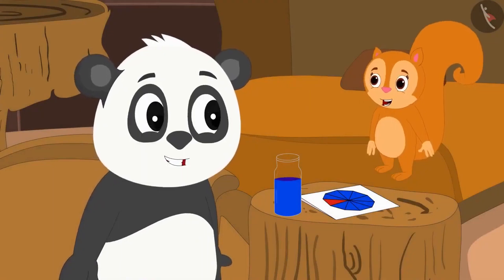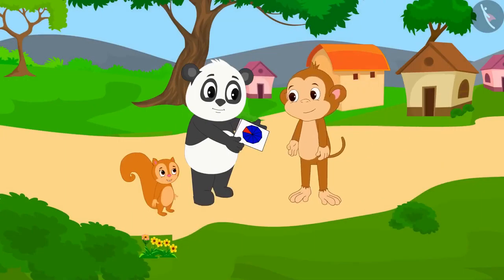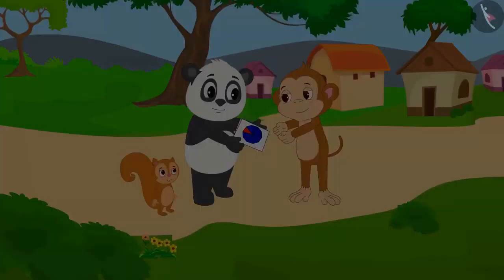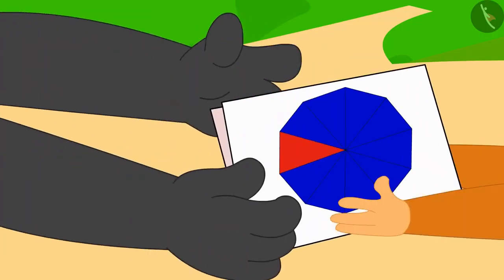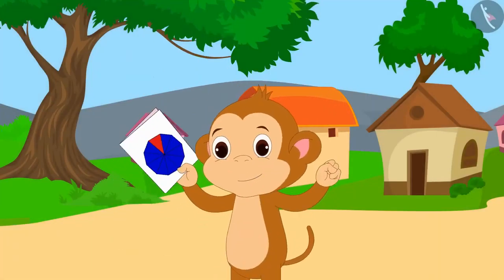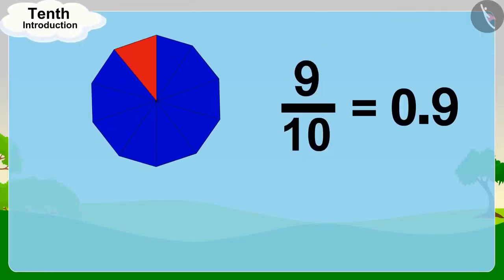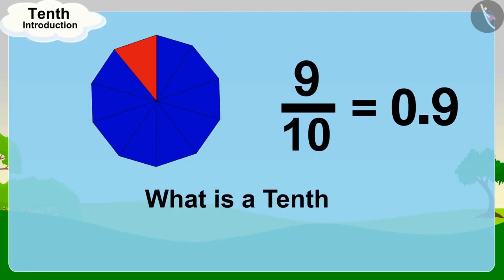Chanda and Golu were very happy. They immediately went and gave the greeting card to Babban. On receiving that beautiful greeting card, Babban started dancing happily. Children, in this video, we learned about what is a tenth. In the next video, we will learn more about it through some interesting examples.